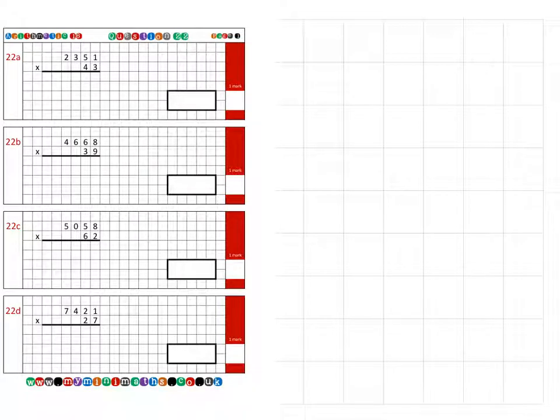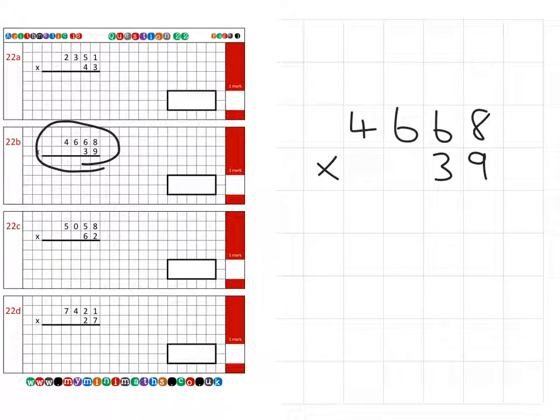Next is question 22b. If I rewrite the question, 4,668, I'm going to multiply that by 39. First of all, we're going to multiply the units columns. That's 9 times 8 which is 72. Then 9 times 6 which is 54 plus the 7 which is 61. 9 times 6 is 54 plus the 6 is 60. 9 times 4 is 36 plus the 6 is 42.